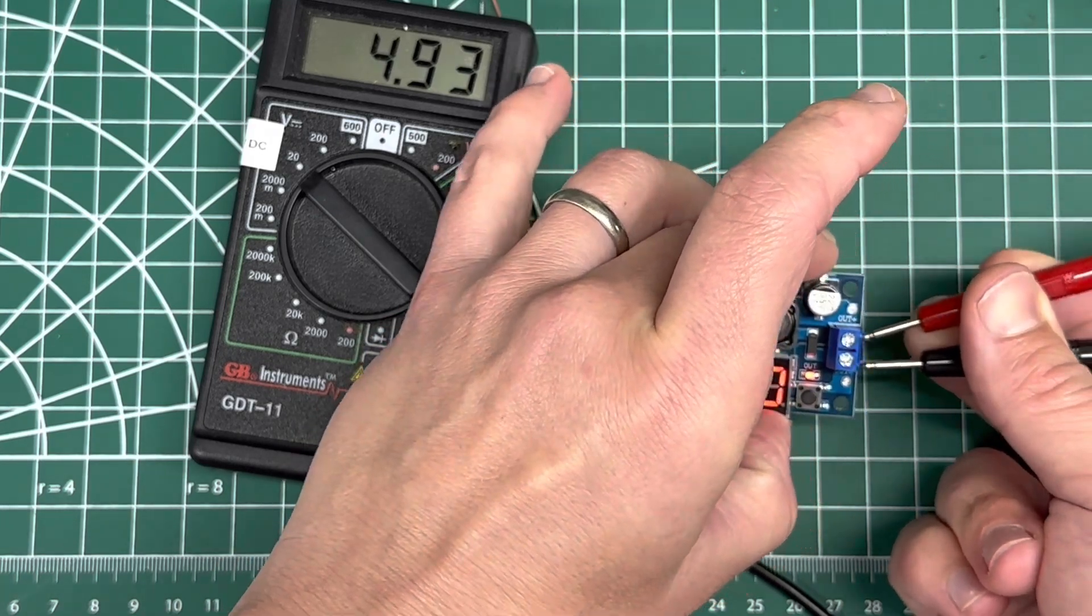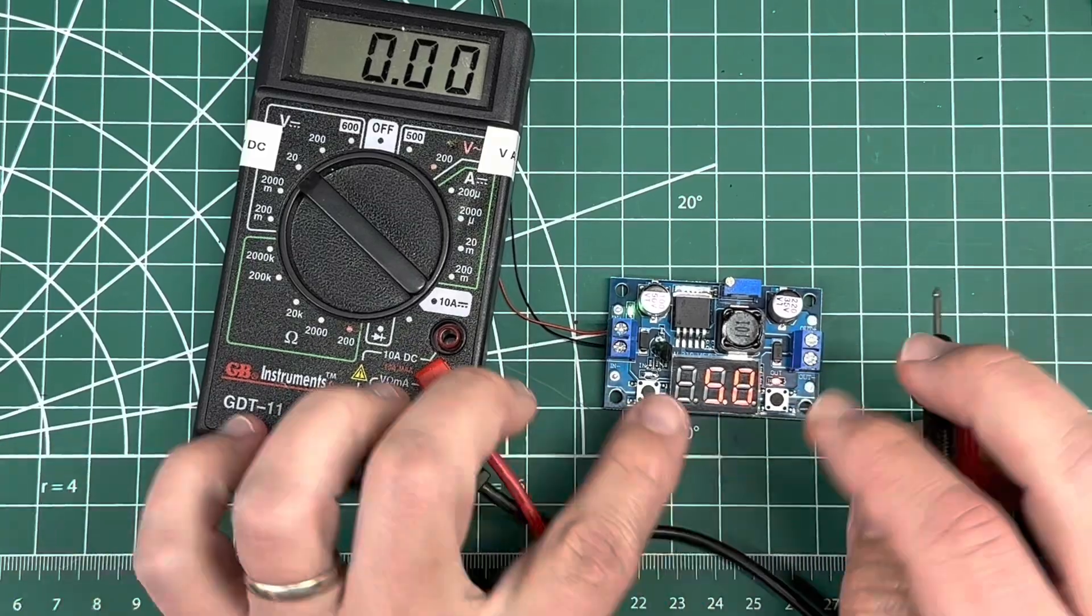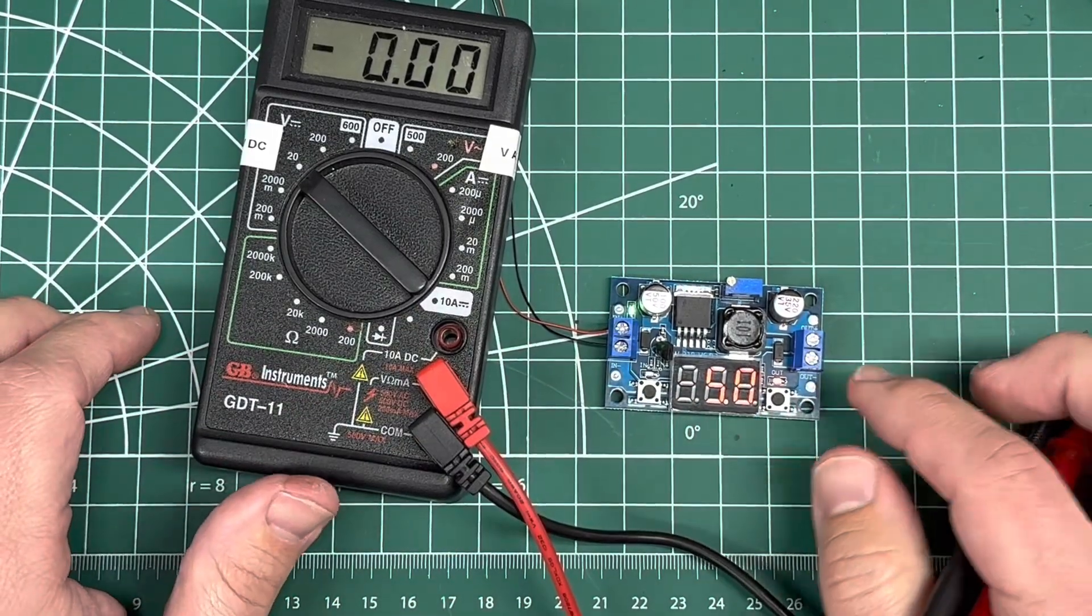This only goes in tenths, so I could drop it down to 4.9 if I wanted to. But these fluctuate—it says 0.05 fluctuations.